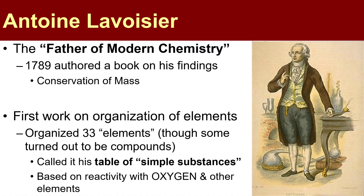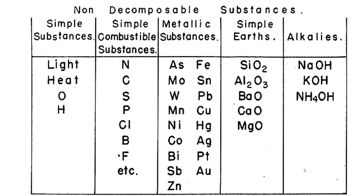The most important thing Lavoisier did was organize the 33 elements at the time into a table format. You'll see on this slide it says 'elements' in quotes because some things there are not elements but are compounds. He called this table his list of simple substances, and he based it all on reactivity with oxygen and other elements. You can see he lists nitrogen, carbon, sulfur, etc. He does have aluminum oxide and silicon dioxide, which we know are compounds. He also lists light and heat, which are not elements at all, but he did make headway by looking for similarities between the properties of the elements and what they reacted with.